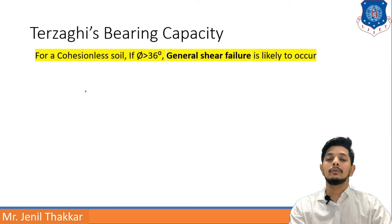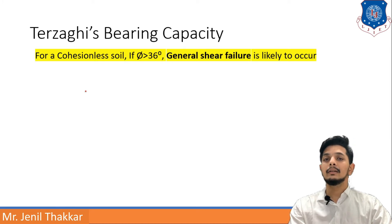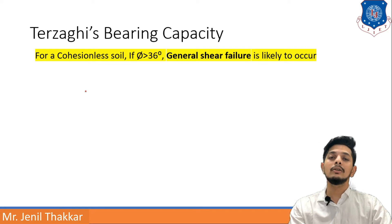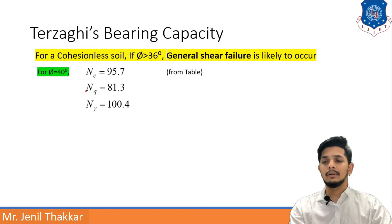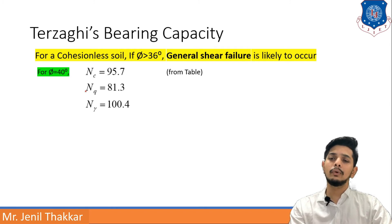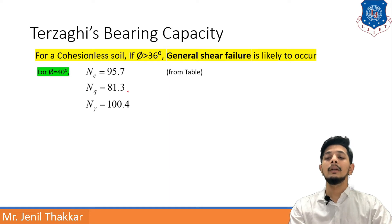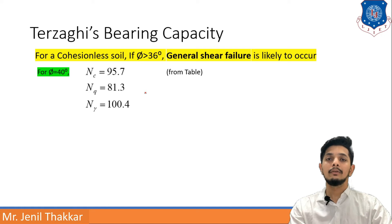If φ is greater than 36°, Terzaghi stated that it will be a general shear failure. In the case of general shear failure, for example if φ = 40°, then N_C, N_Q, and N_γ are obtained directly from the table shown previously.